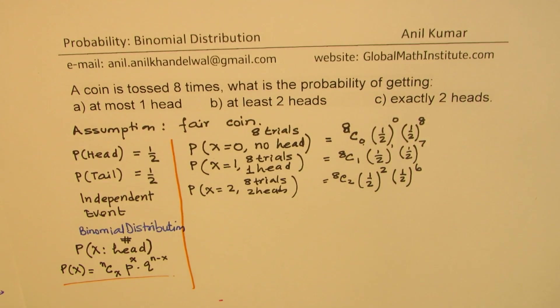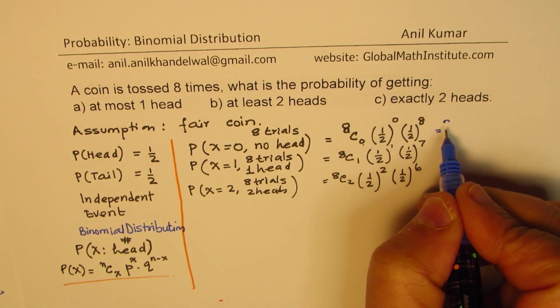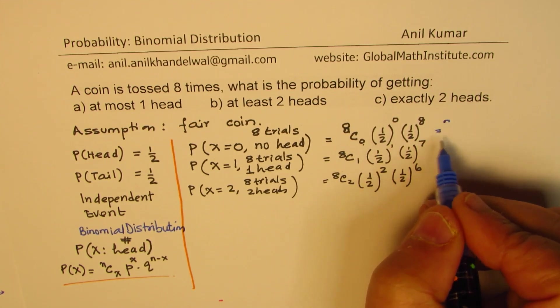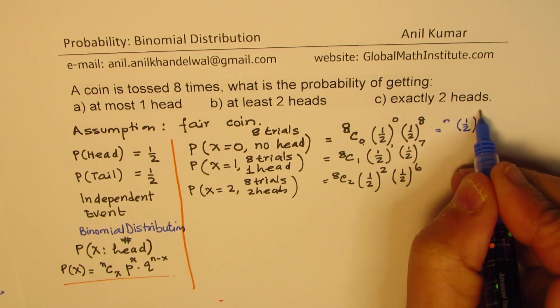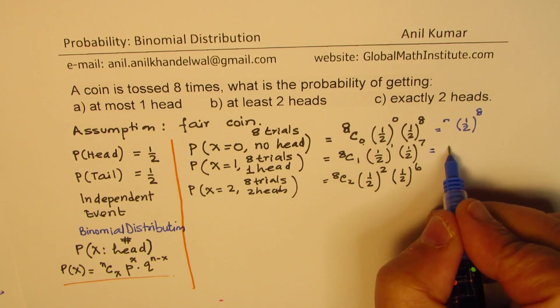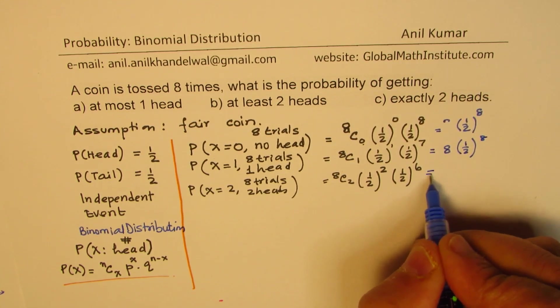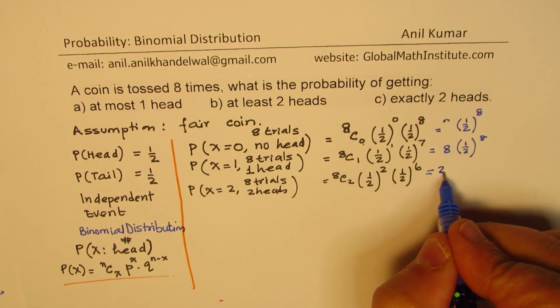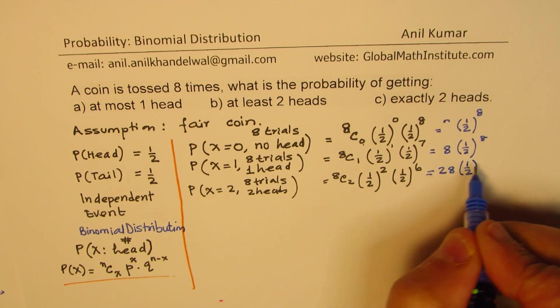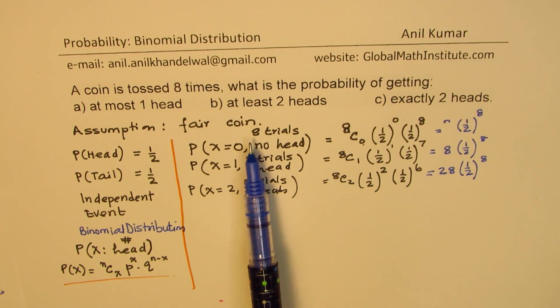So in a way, what you see from here very clearly, that these probabilities are 8C0, let's write 8C0 is one, so we can write this as half to the power of eight. Now in this case, what we get is 8C1 is eight times half to the power of eight. 8C2 will be 56 divided by two, which is 28, half to the power of eight. So those are the probabilities for exactly no head, one head, or two heads when you're throwing or tossing the coin eight times, a fair coin is being taken.